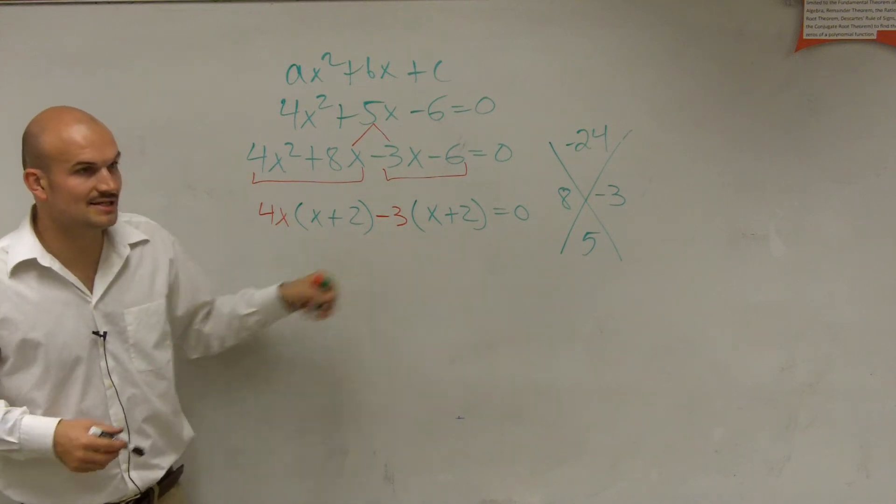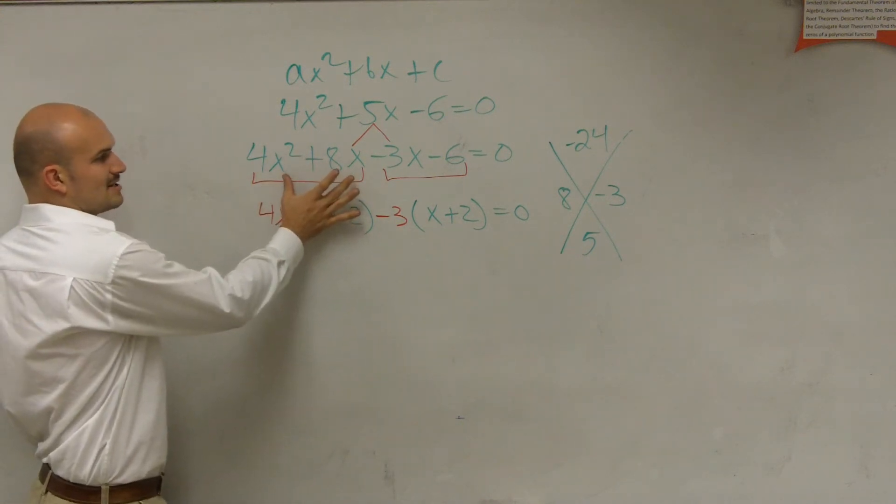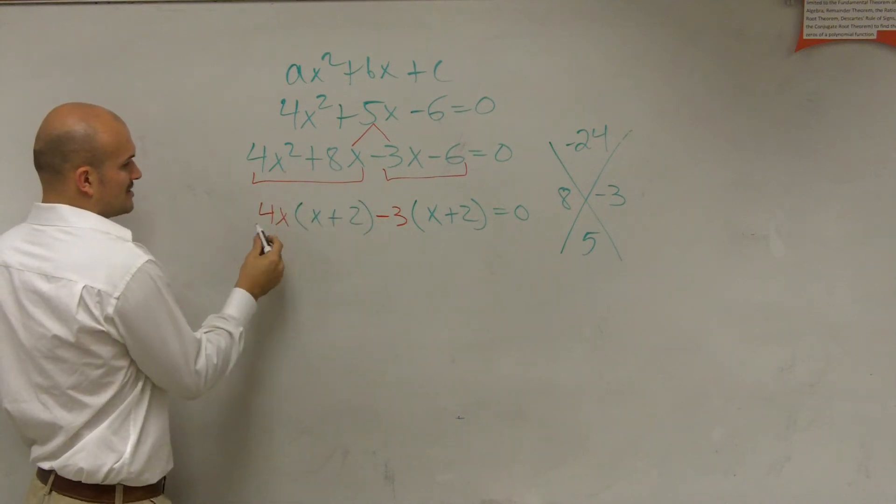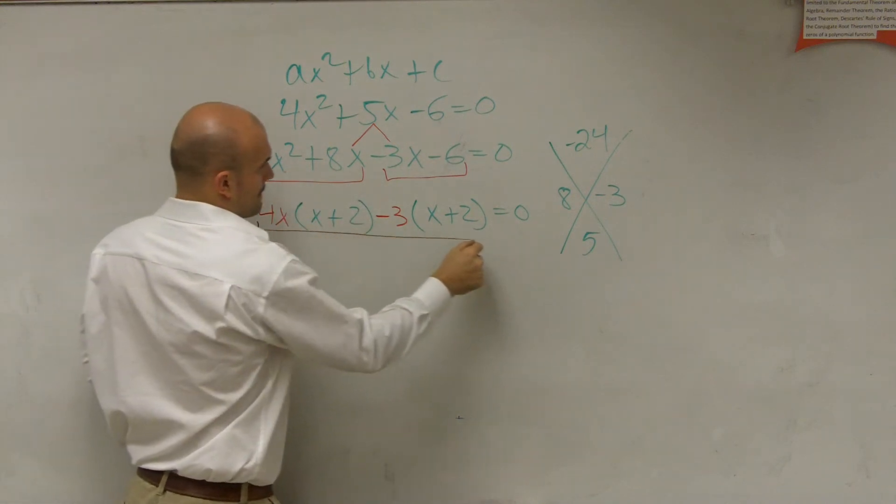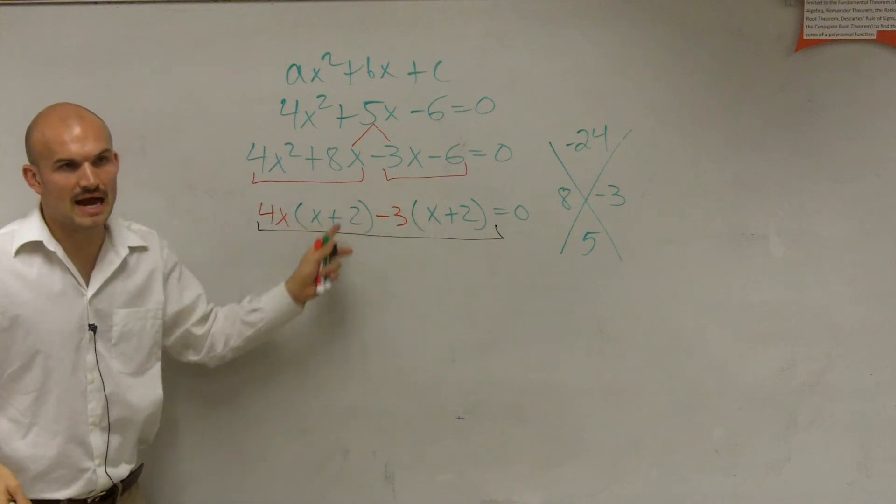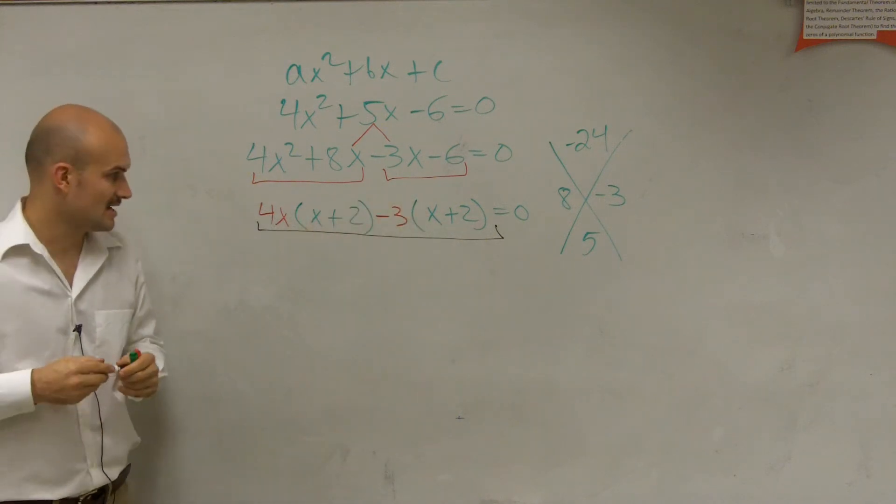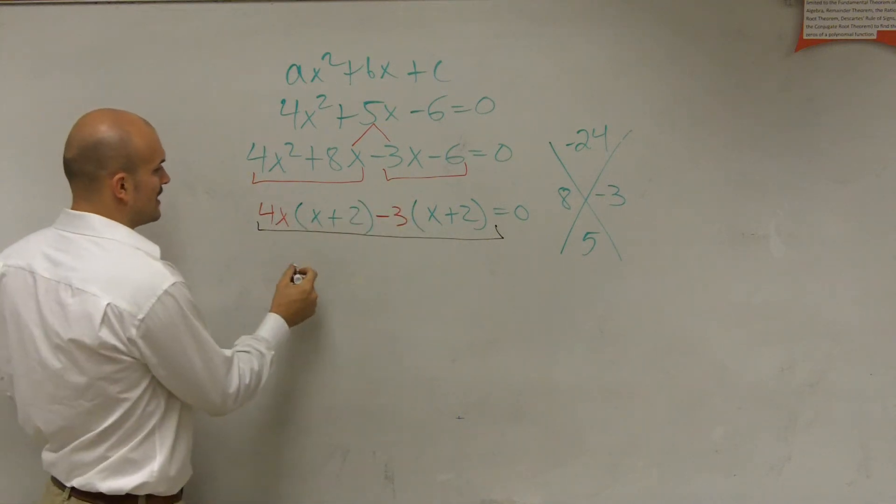Now, I look at these two terms, and I say, just like, remember how I put these in brackets, and I said, what do these have in common? Let's put this in brackets. What do these two now have in common? x plus 2. So you factor out an x plus 2.